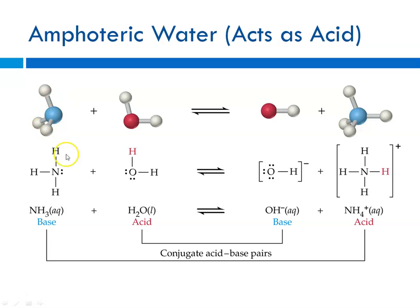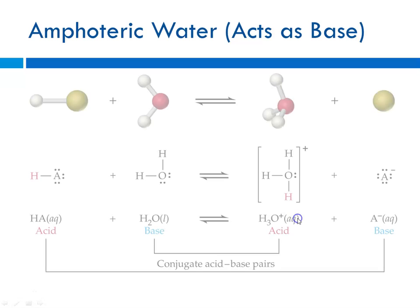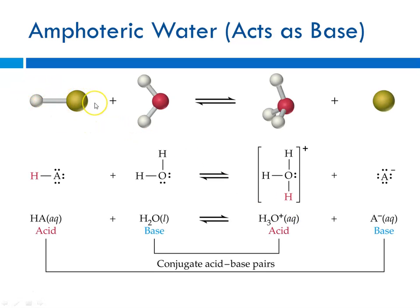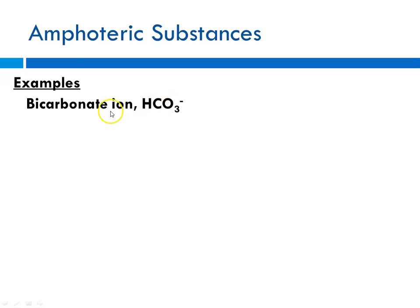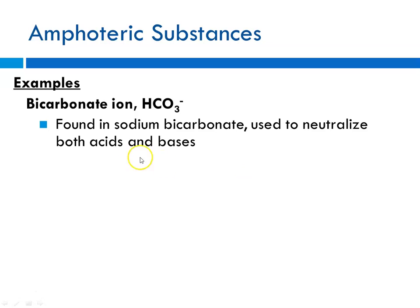Here is an example showing water acting as an acid: ammonia encounters water, and what happens is the water donates the proton, leaving behind the hydroxide ion, and you get the ammonium ion. And here, amphoteric water acting as a base: if it encounters some generic HA acid, water accepts the proton and forms the hydronium ion, leaving the base ion. Some other examples of amphoteric substances are bicarbonate. When there's acid present, sodium bicarbonate can neutralize acids and bases — it can be used to neutralize either.